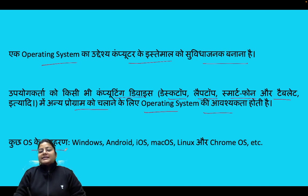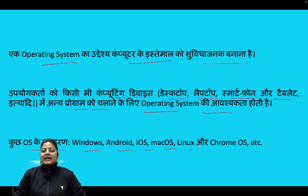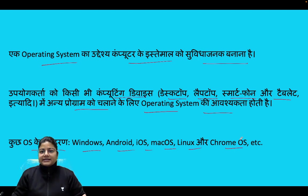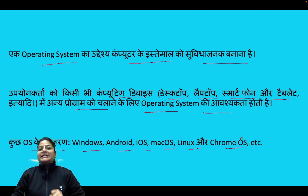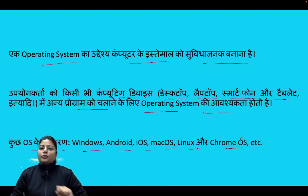Some examples of popular operating systems include Windows, Android, iOS, macOS, Linux, and Chrome OS. These are all the popular operating systems we have used until now. And to this group, a new mobile operating system has been added — its name is BharOS, which is India's first mobile operating system.